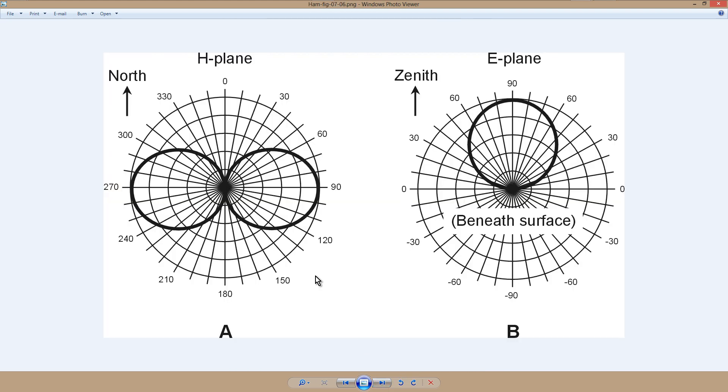Here is figure 7-6 from that book, and this is the chapter on antennas. These are directional patterns that you might recognize as polar coordinate systems with zero degrees of azimuth at the top, then 30-60-90, representing east in this case because it is an H-plane view, meaning horizontal plane, looking straight down on the antenna which is at the center.